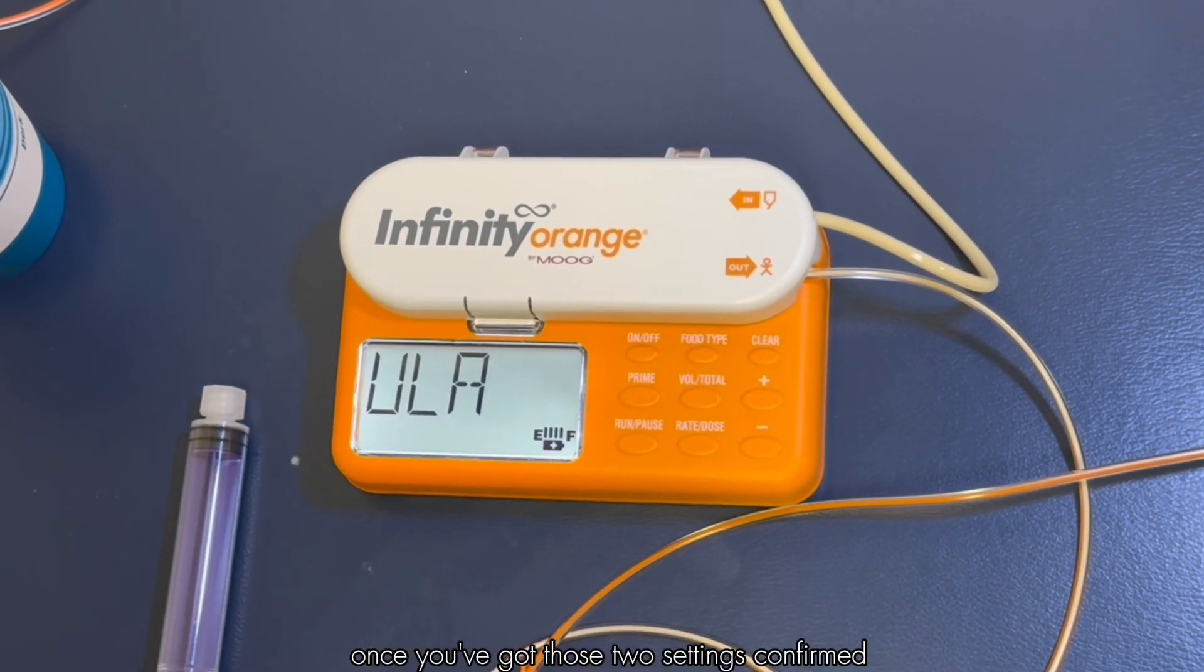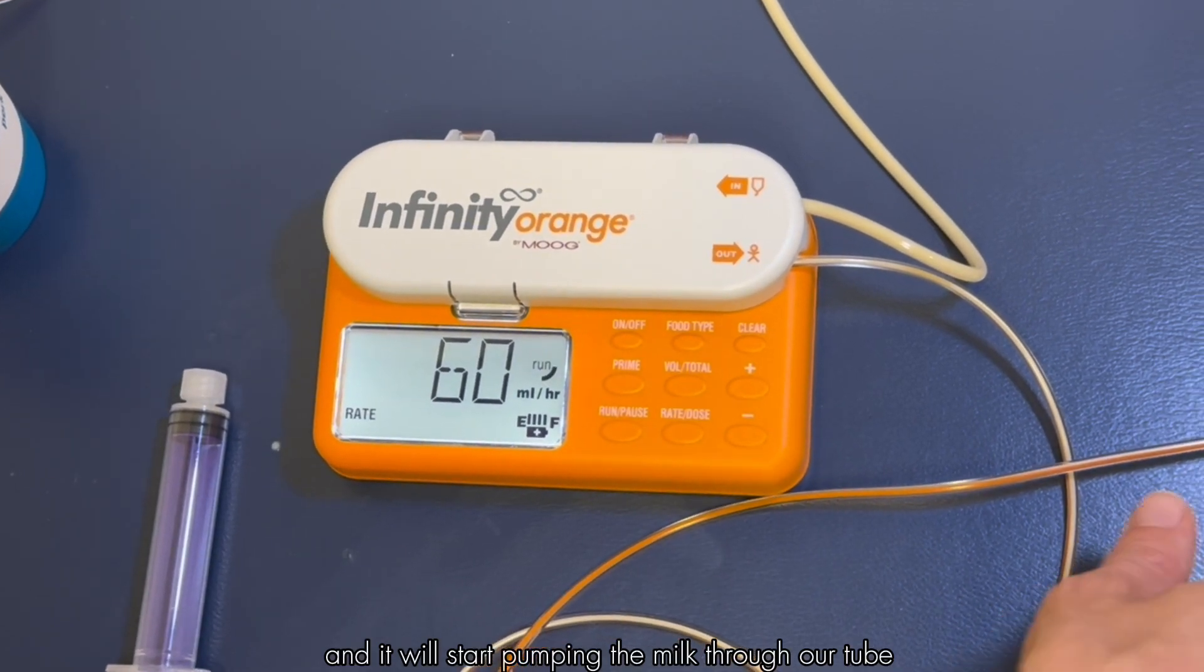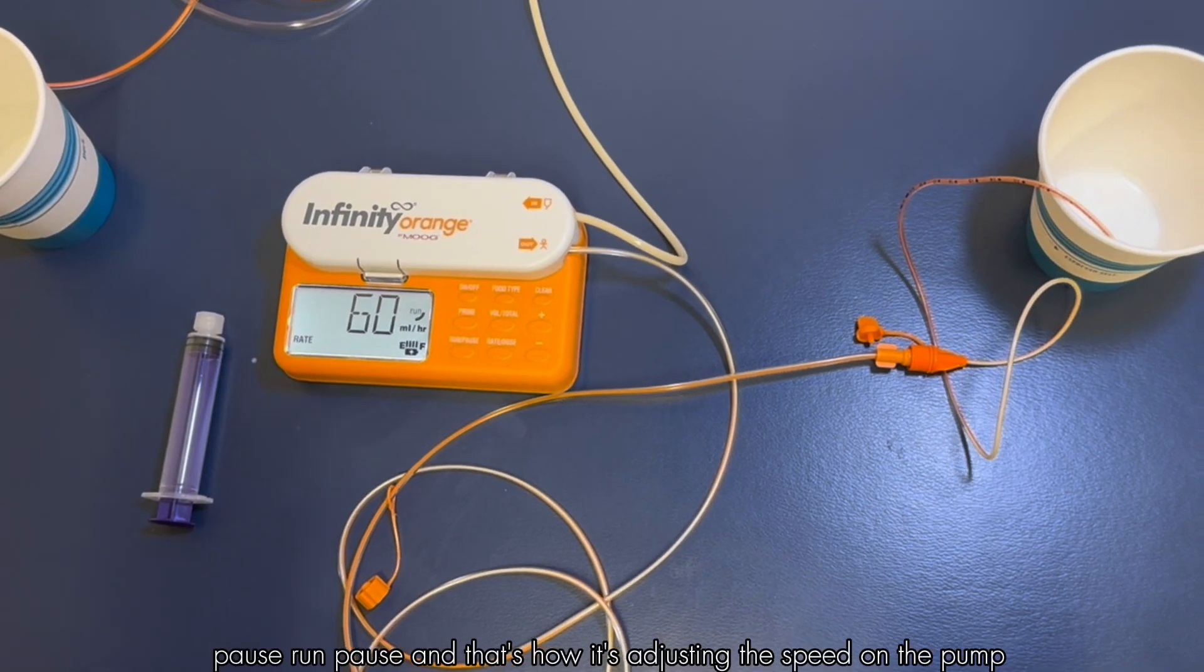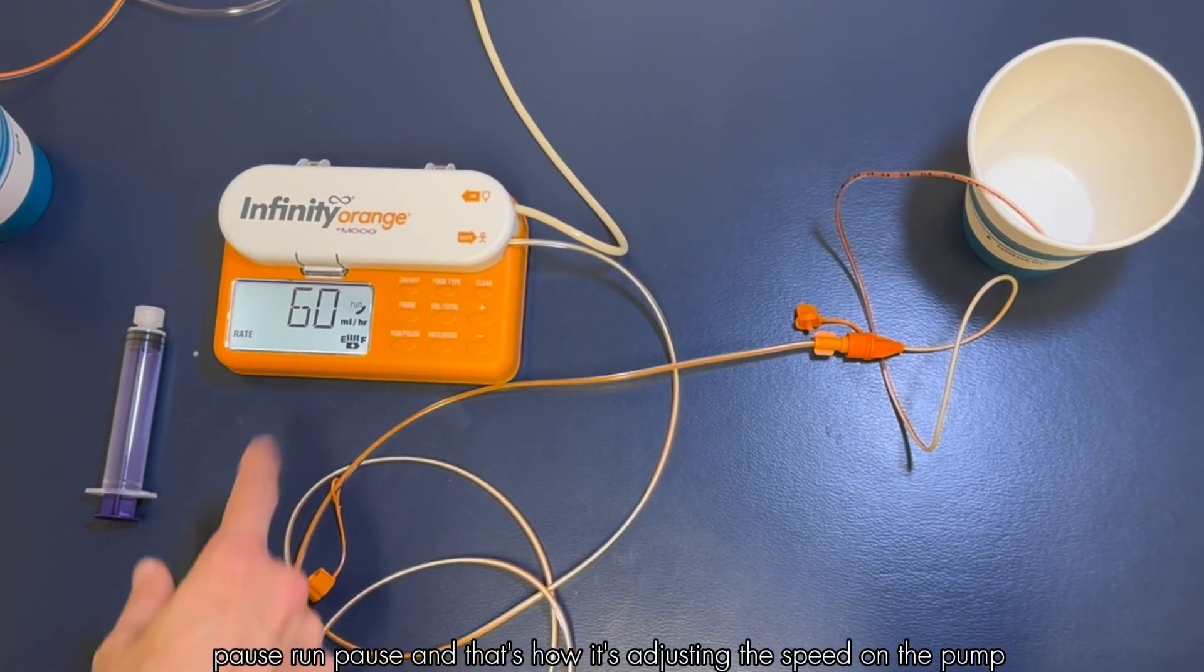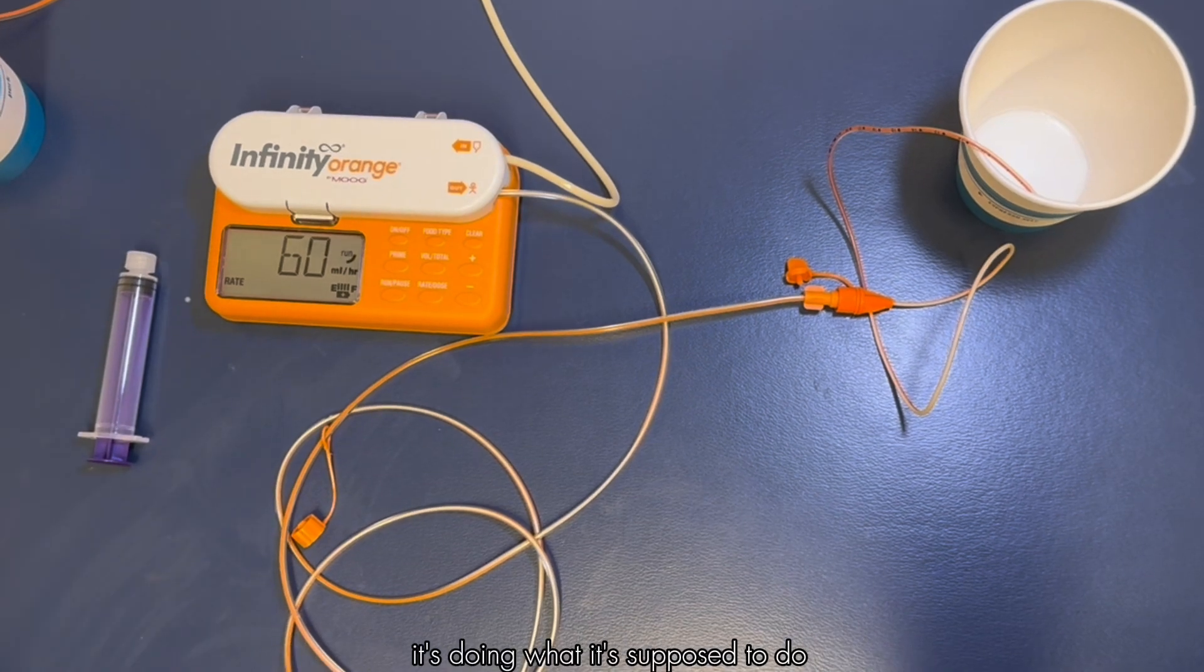Once you've got those two settings confirmed you can hit run pause again and it will start pumping the milk through our tube. You'll hear it run pause run pause and that's how it's adjusting the speed on the pump. As long as this little circle is going around that says run it's doing what it's supposed to do.